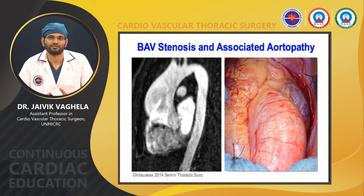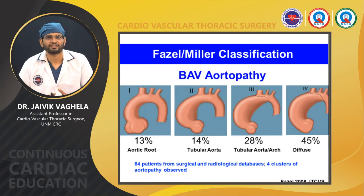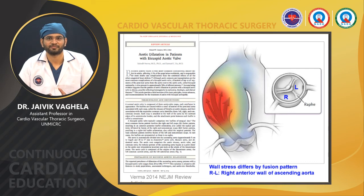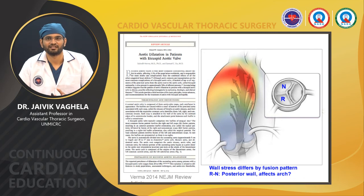Bicuspid aortic valve stenosis is associated with aortic anomalies. Using the Miller classification of bicuspid aortic valve aortopathy: in 30% of cases the aortic root is involved, in 40% the tubular aorta is involved, in 28% the tubular aorta involves the arch, and in 45% it is diffuse generalized aorta. Bicuspid aortic valve is more commonly associated with aortopathy than tricuspid because the blood jet directly hits the outer curvature. Wall stress differs by fusion pattern — with right-left cusp fusion, there is a direct jet over the right anterior wall of the ascending aorta causing anterior dilatation, and other fusion patterns are associated with arch involvement.